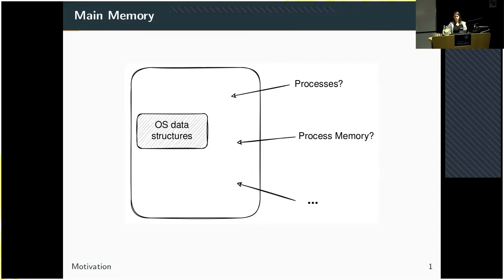In the case of the Linux kernel, for example, there's the task list. This is all great if we have consistent data structures, but oftentimes main memory images cannot be taken in a system that is in a frozen state. So while the image is taken, we have concurrent processes that make changes to the memory.